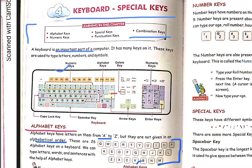There are 26 alphabet keys because we have 26 alphabet letters. We can type letters, words, and also sentences with the help of alphabet keys. So with these alphabet keys, we can type letters, words, and sentences.